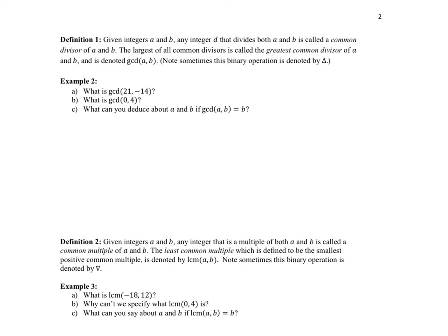I prefer 'factor' over 'divisor,' but most textbooks write GCD, which is why I defined it that way in our notes. If we wanted to make it a binary operation connecting A and B to produce a third number — the greatest common factor — we use this triangle symbol.